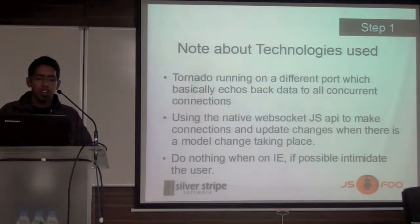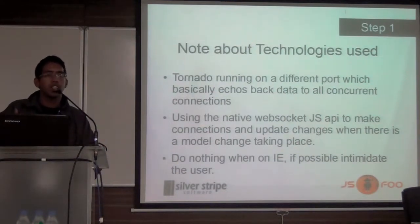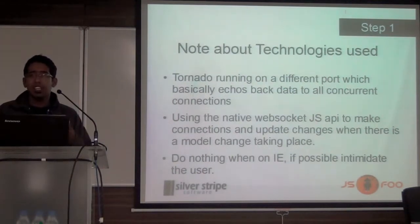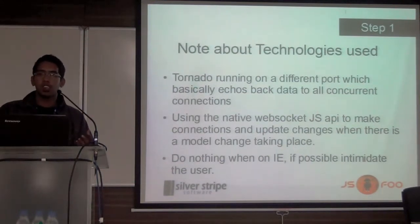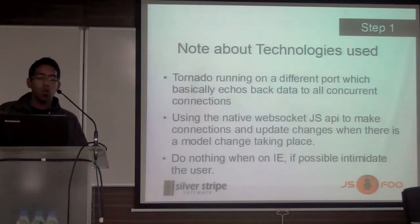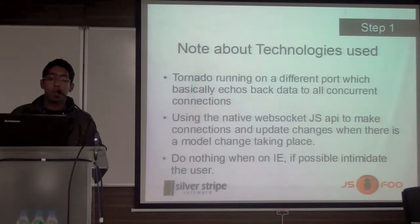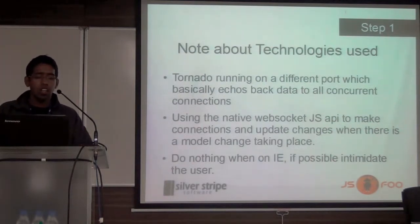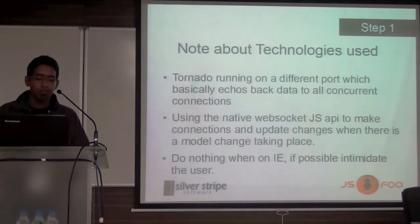A small note on the technologies I've used: I'm using Tornado, which is a Python web server running on a different port, which basically handles WebSocket connections. WebSockets are not handled the way HTTP is. If you get into the details, you start with an HTTP 1.1 call and then that gets upgraded into the WebSocket spec. But as implementers, we need not worry much about it because your framework, your browser and your server will take care of it. What you need to do is get a server which does the WebSocket spec properly. Tornado does it — it has a WebSocket handler running on a separate port 8080, not on default port 80.